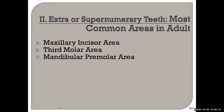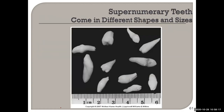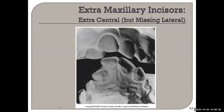There are also supernumerary teeth in the mandibular premolar area. These come in all sorts of different shapes and sizes. One particular model has three central incisors but only one lateral.